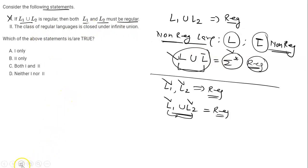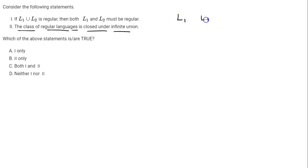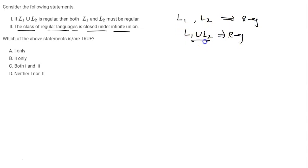Now let's see Statement 2, which says: the class of regular languages is closed under infinite union. This statement is false. Remember, the class of regular languages is closed under the union operation — meaning if L1 and L2 are both regular languages, then L1 union L2 will definitely be regular. However, the class of regular languages is not closed under infinite union.